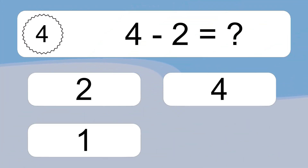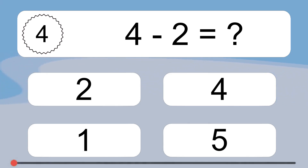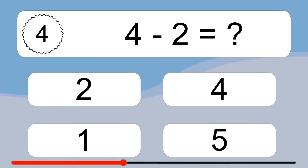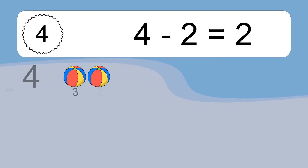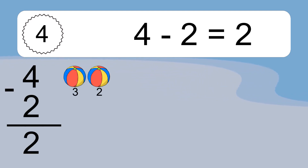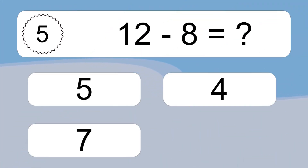4 minus 2 equals what? 4 minus 2 equals 2. Let's count it: 3, 2.